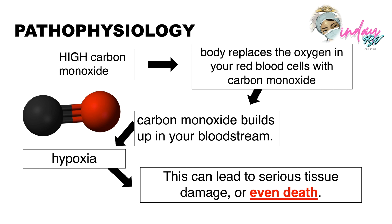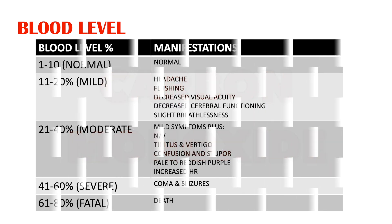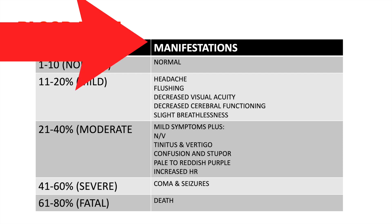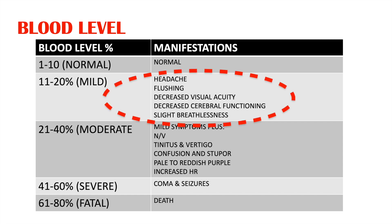We also need to talk about blood levels of carbon monoxide. There are five levels: normal, mild, moderate, severe, and fatal. The normal blood level is 1 to 10, so no manifestations are expected yet. If the blood level reaches 11 to 20, the patient is in mild carbon monoxide poisoning. Manifestations at this level include headache, flushing, decreased visual acuity, decreased cerebral functioning, and slight breathlessness — primarily attacking the head and sensory organs.